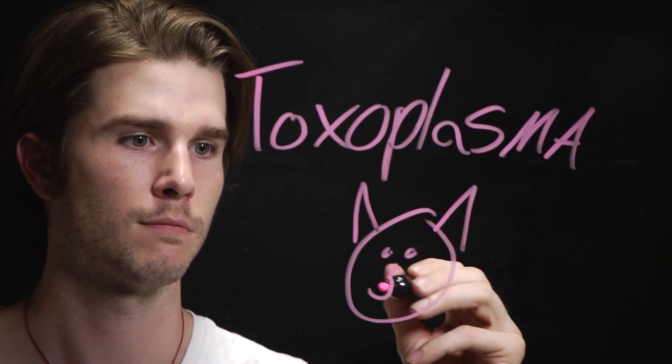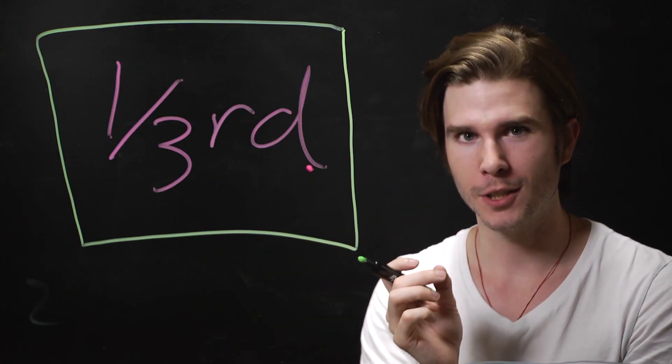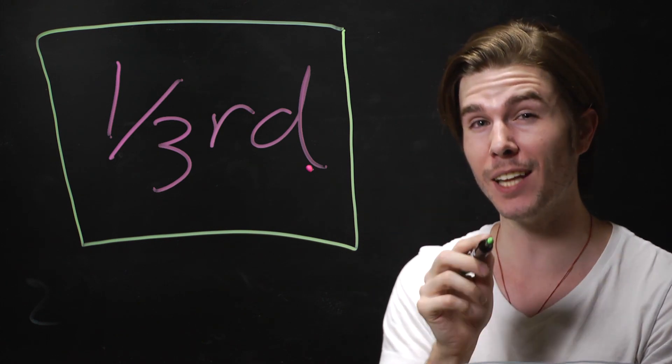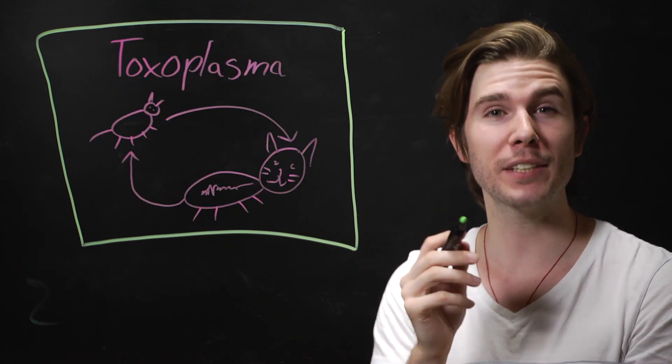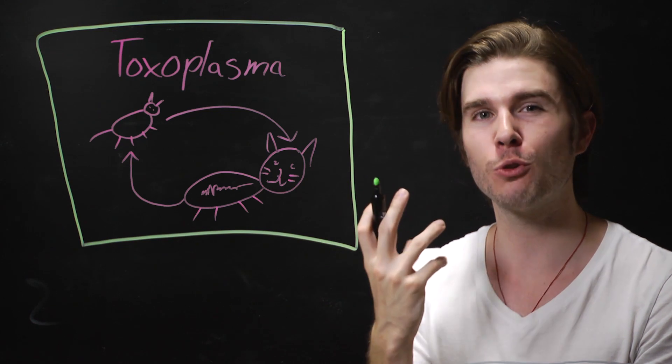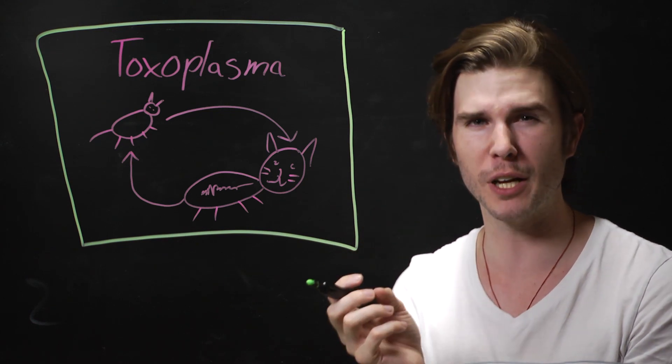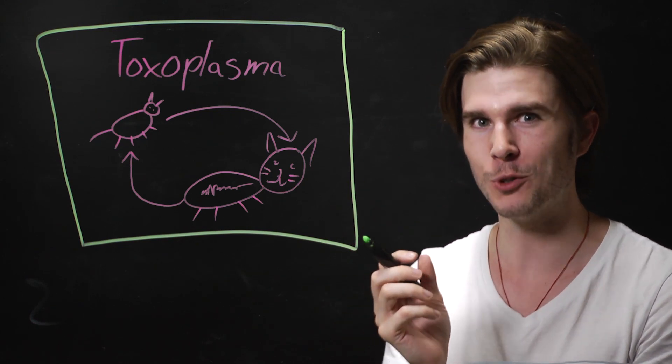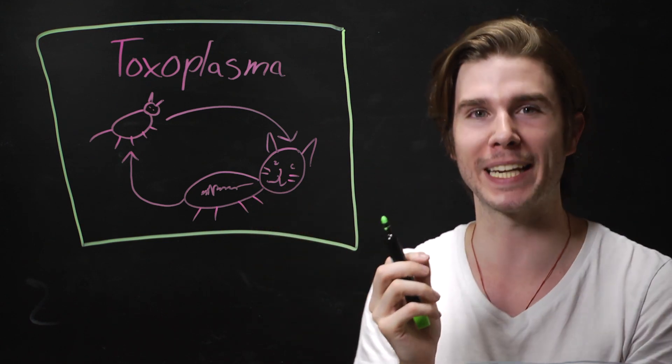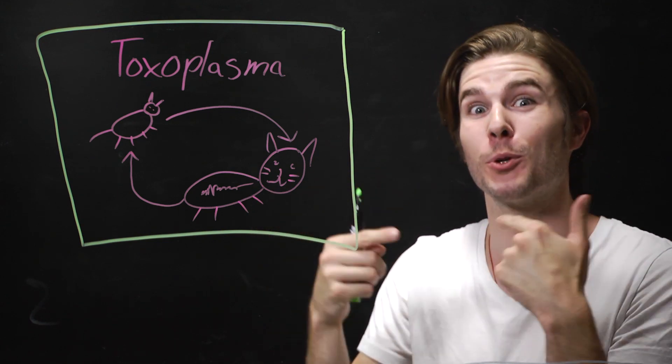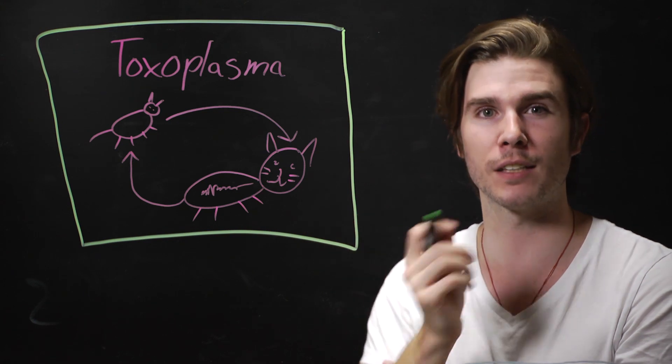There's even another parasite called Toxoplasma gondii that affects an estimated one-third of the human population. To complete its life cycle, it gets into the bodies of rats, mind controls them so that they're no longer fearful of the smell of cat urine, which makes them get eaten more often by cats. The parasite then reproduces in the bodies of cats and eventually infects us.